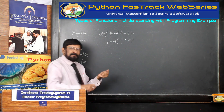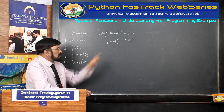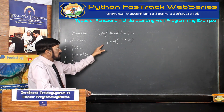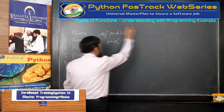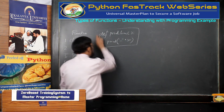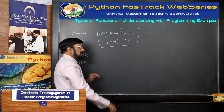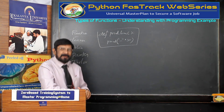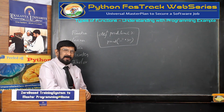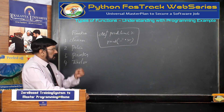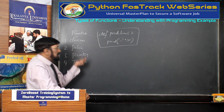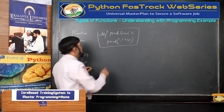If it returns a value, we write a return statement — which we did not write here. So this is the first type. The second type is a function which takes no argument but returns a value.